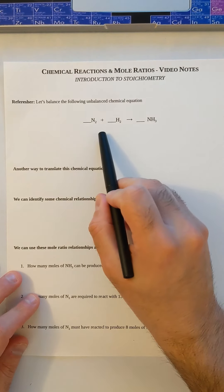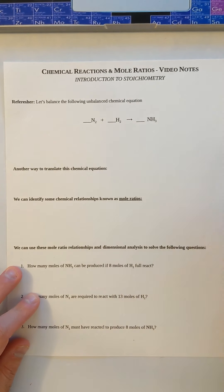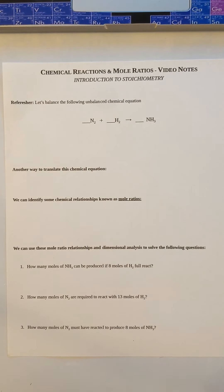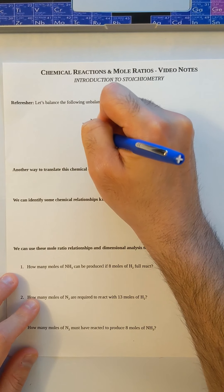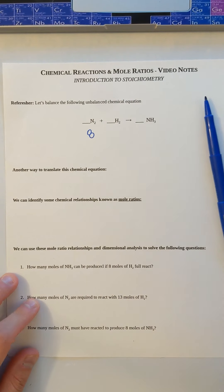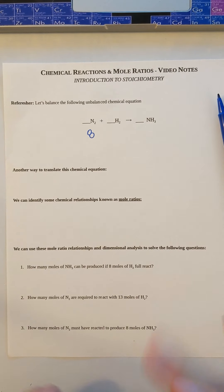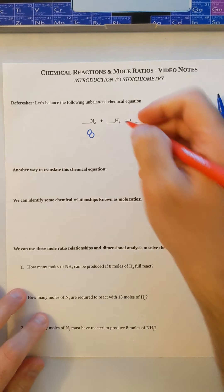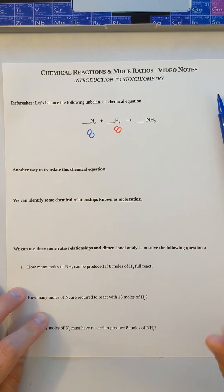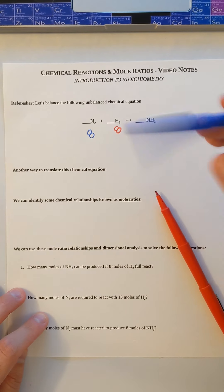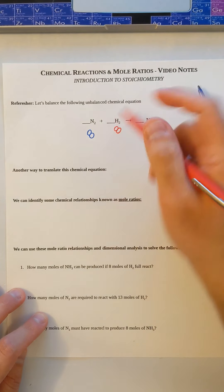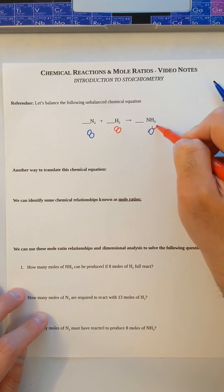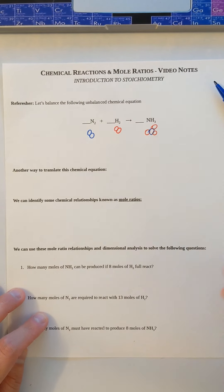So we have this chemical equation here: N2 plus H2 yields NH3. N2 is two N's that are connected, so I'm going to draw N2 like this in blue. H2 is two H's that are connected. And then NH3 is one N with three H's.